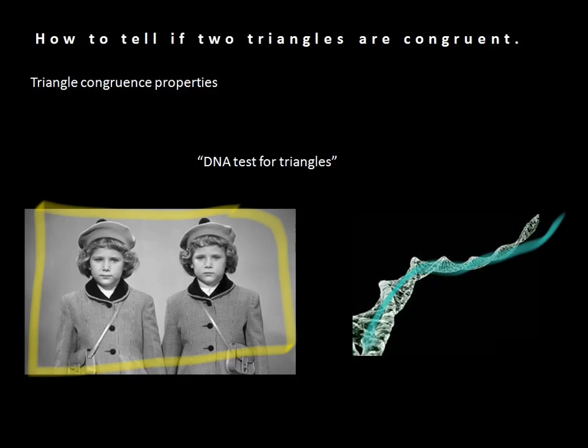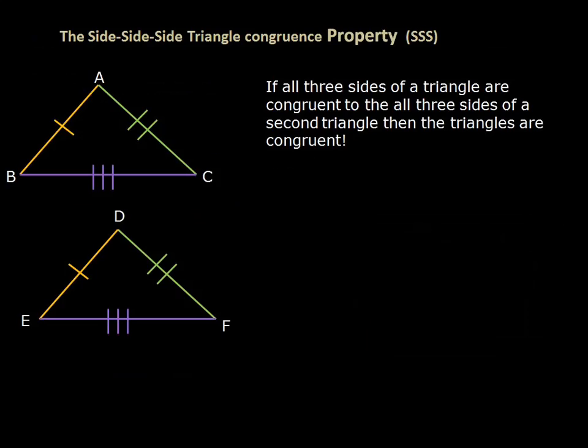Let's take a look at the first one. The first is the Side-Side-Side triangle congruence property. It says that if all three sides of a triangle are congruent to all three sides of a second triangle, then the triangles are congruent. Over here you can see a couple of triangles, and we're going to work through how to write this out.